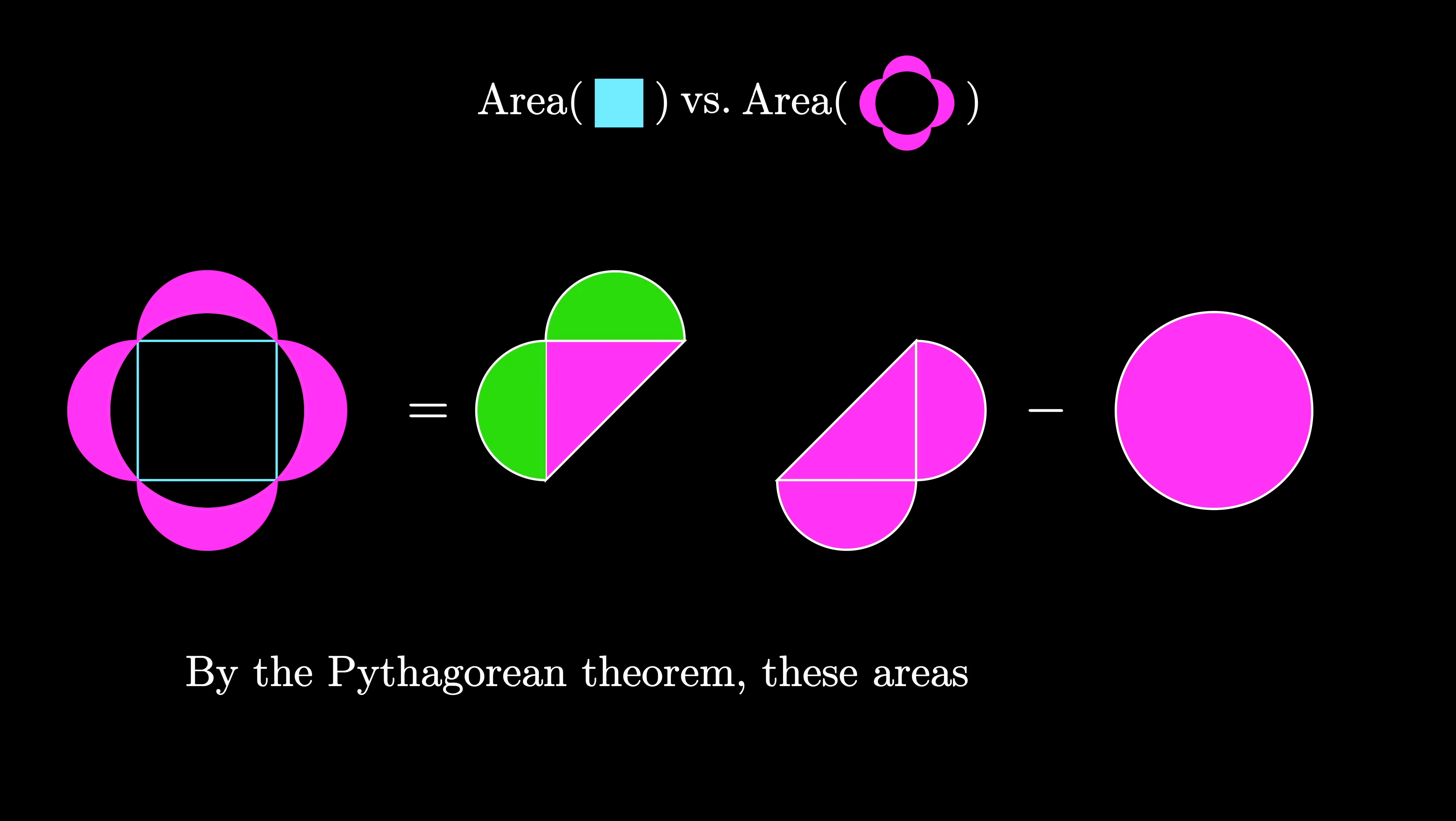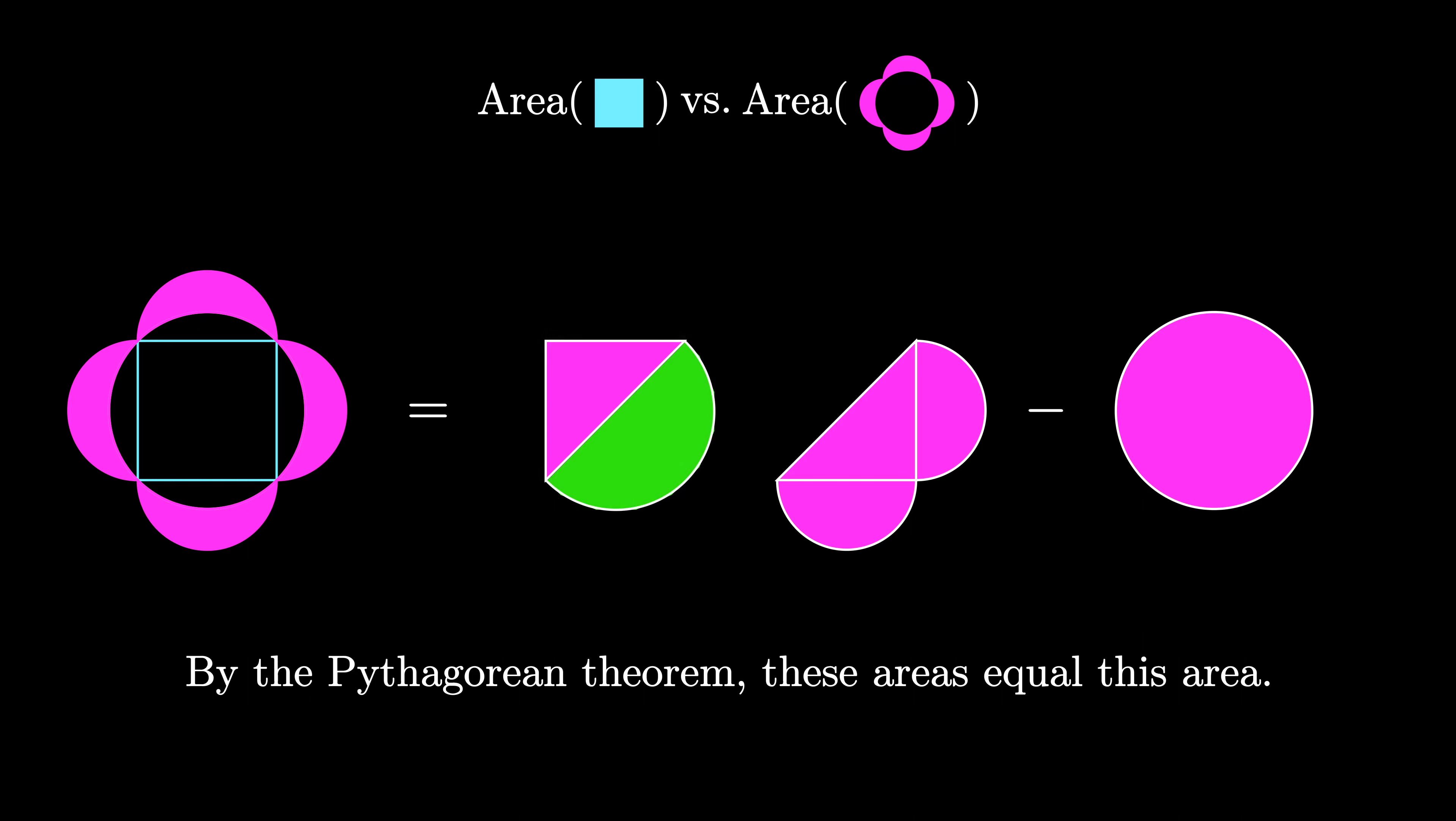According to the Pythagorean theorem, the combined area of the two semicircles on the legs is equal to the area of the semicircle drawn on the hypotenuse of the triangle.